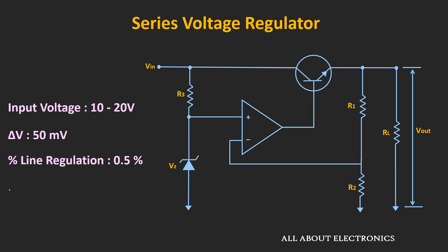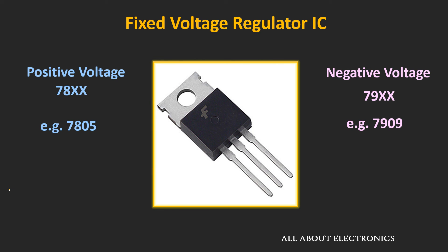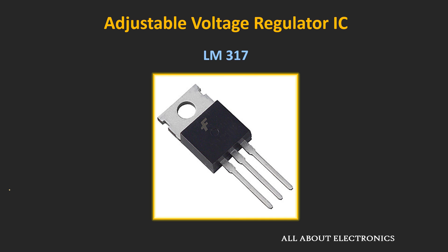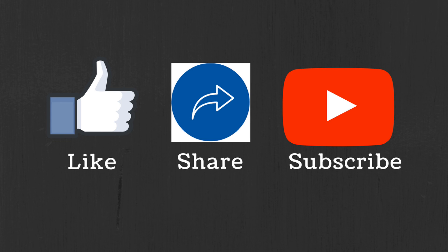If we want to achieve better regulation, we can use linear ICs like the 78xx series for positive voltage and the 79xx series for negative voltage. For example, the 7805 provides a fixed output of 5V, while the 7909 provides a fixed output of −9V. For variable regulated output, one can use the LM317. We will talk more about these linear ICs in a separate video. I hope you understood the basics of regulation and how to design a voltage regulator using the op-amp. If you have any questions or suggestions, let me know in the comments below. If you liked this video, hit the like button and subscribe for more such videos.